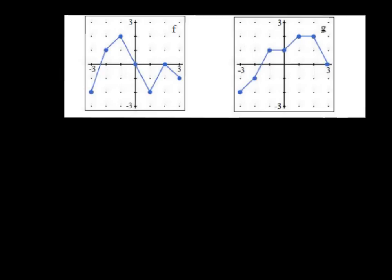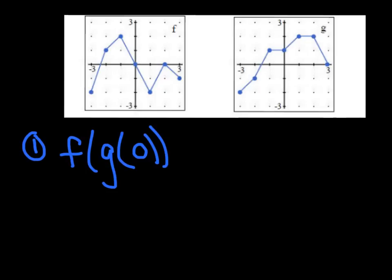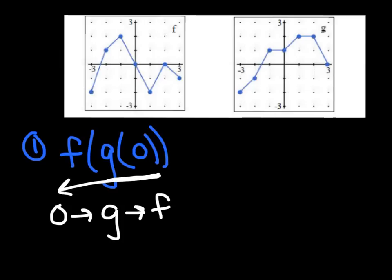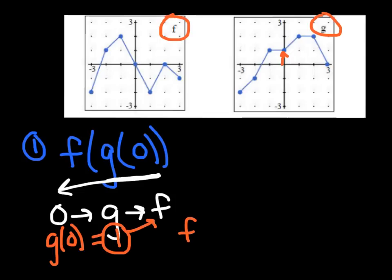Now besides a function and a table, we could also give you a graph. We'll just take the examples down. Starting with f of g of 0: working backwards, I start with 0, substitute that into g, then substitute that into f. First evaluating g of 0 — this is the f graph and this is the g graph. Going to the g graph, inputting x = 0 and looking up, the height is 1. So g of 0 = 1. Now substituting that into f: finding f of 1 — going to the f graph, inputting x = 1, and the height of the graph is negative 2.